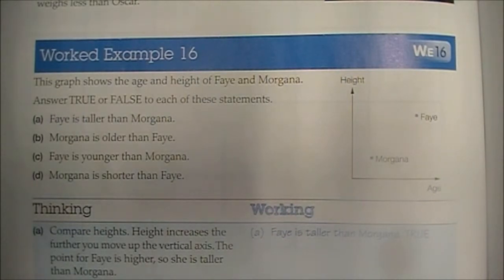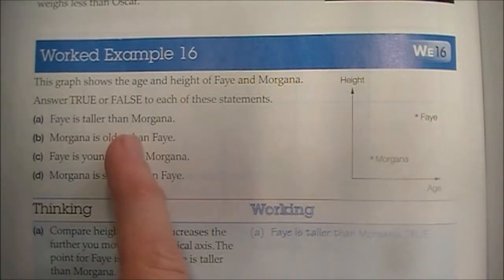Morgana is older than Faye. On our age axis, Morgana is here. Faye is further along, so Faye is the older one. So that's false.